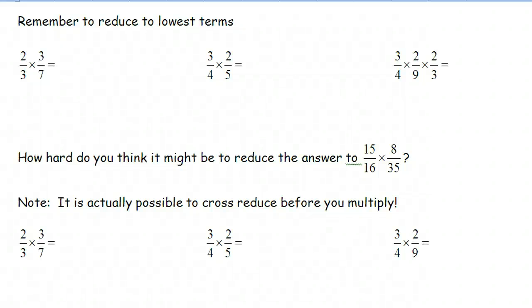We know that we can multiply fractions by multiplying the numerators together and multiplying the denominators together. So when the question is two-thirds times three-sevenths, the numerators two times three multiply to make six, and the denominators three times seven multiply to make twenty-one.